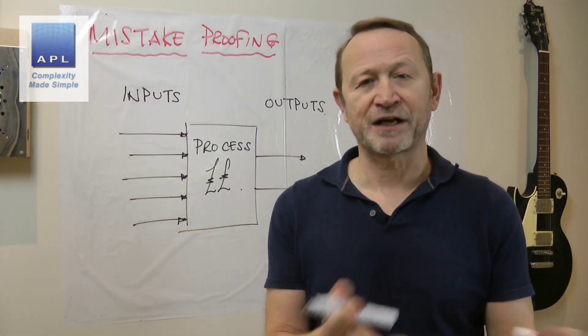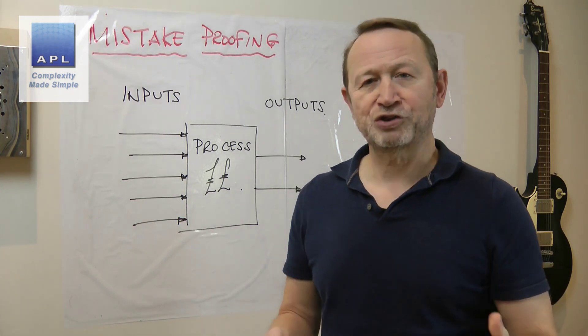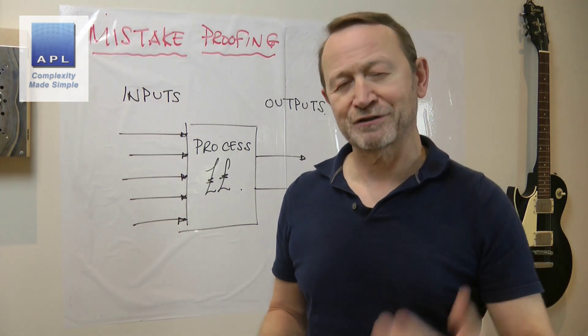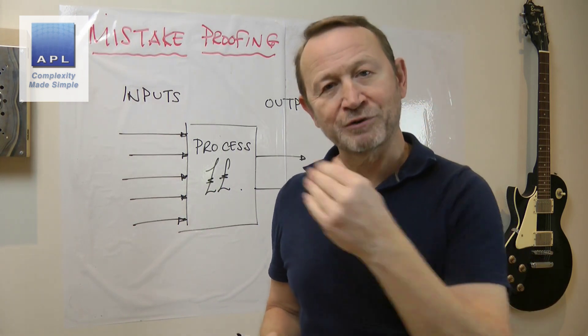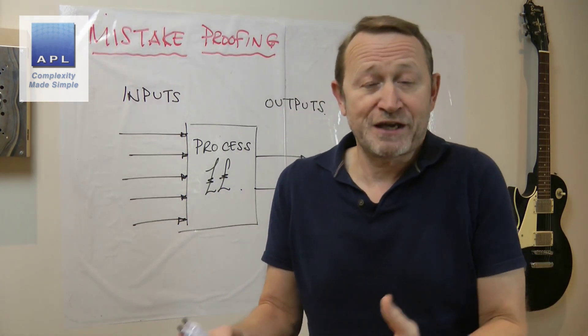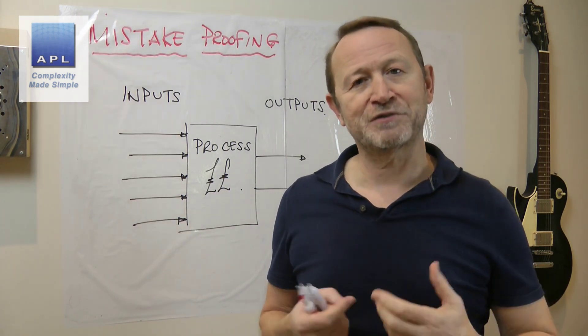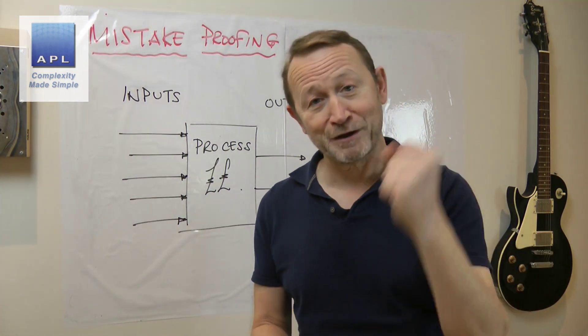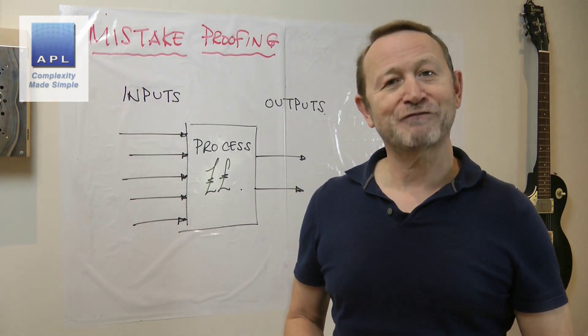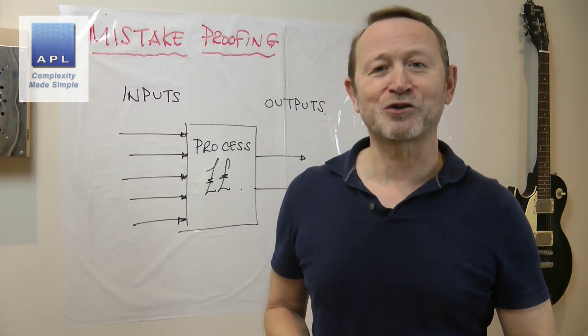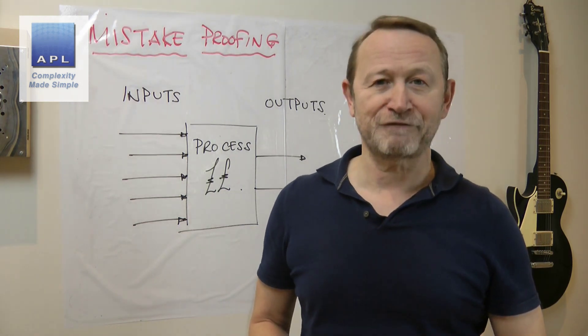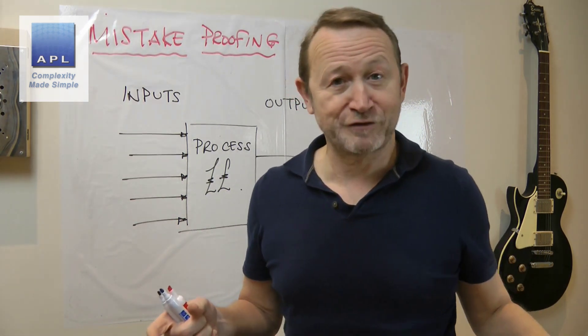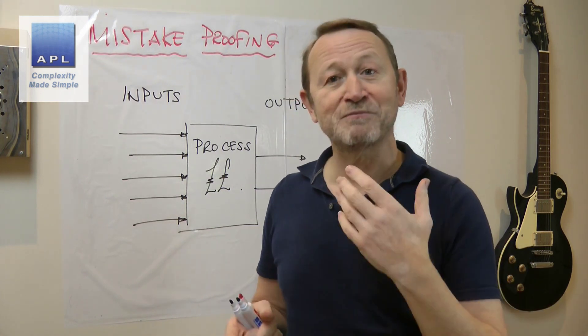Mistake proofing is a fantastic way of getting process control. When you're trying to control a process you have operators and people and management and all sorts of things going on. They want to interfere, they want to change, or sometimes they forget. To be fair to somebody, if you give them ten rules there's a good chance they'll only remember nine of them and they're doing a fantastic job remembering 90 percent of the task. Of course what's the one thing we'll criticize them for? We'll criticize them for the one thing they forget. So the idea of mistake proofing is to make it so the operator doesn't have to remember. The process tells them what to do.